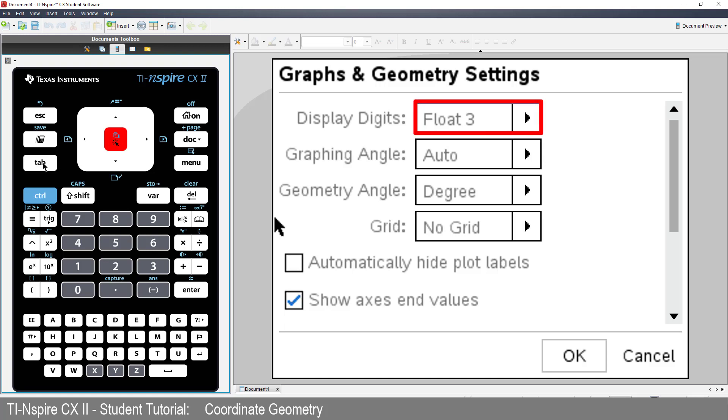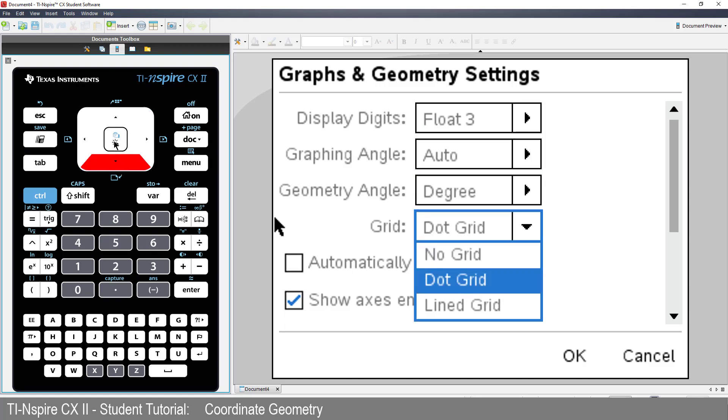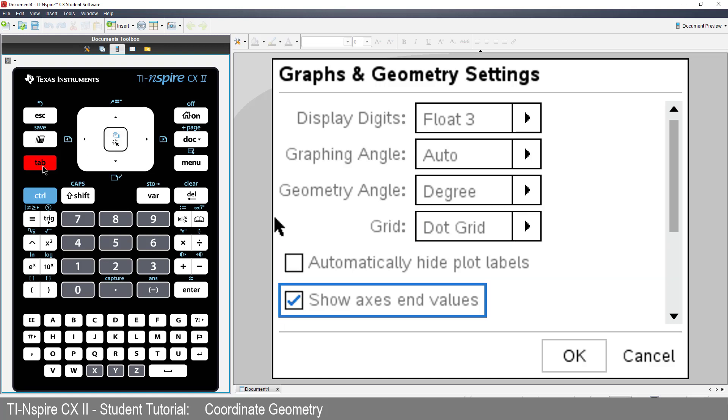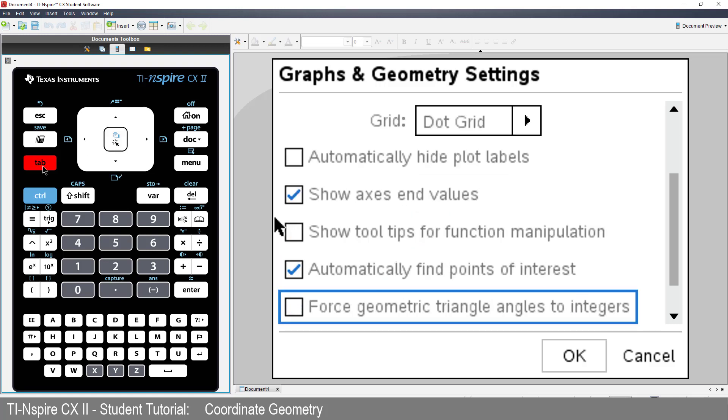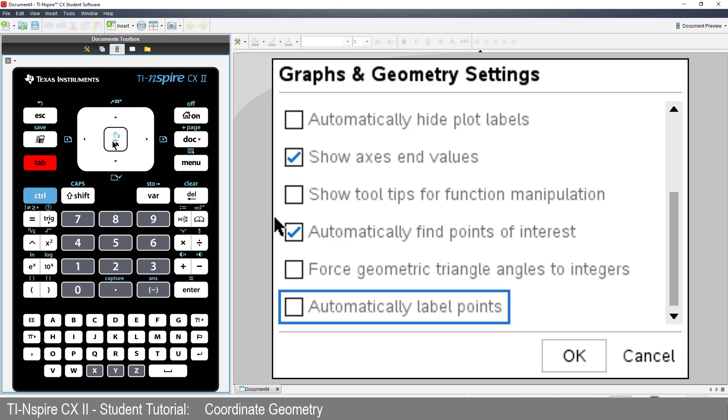The first setting is Float. This is responsible for changing the quantity of digits displayed. For this session, Float 3 is good. Now tab down to Grid, arrow to the right and select Dot Grid. Tab down and select Automatically label points. And now press Enter to accept all the changes.